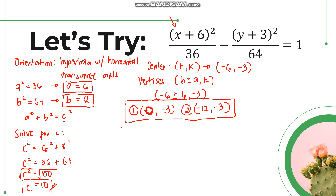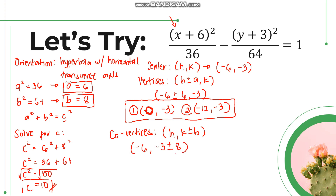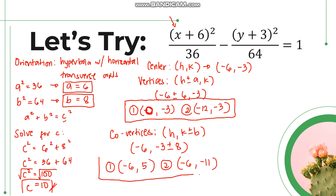After that, we can solve for the co-vertices — these are the endpoints of our conjugate axis. We use (h, k ± b). So we have h = negative 6, k = negative 3, plus or minus b = 8. The first co-vertex is (negative 6, negative 3 plus 8) = (negative 6, 5). The second is (negative 6, negative 3 minus 8) = (negative 6, negative 11).